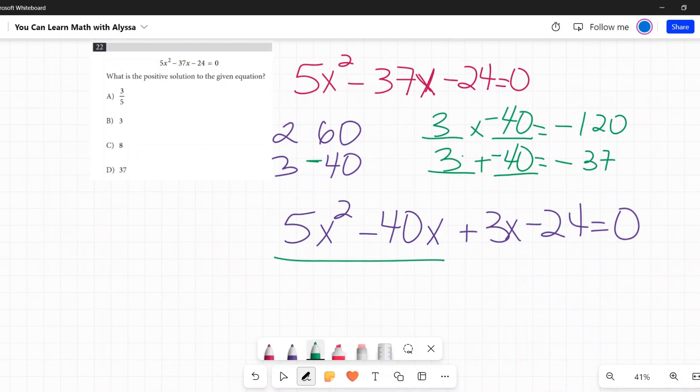Right, so first 5x squared minus 40x. What's my greatest common factor? 5 goes into both of those, so I can bring that out. And x goes into both of those, so I can bring that out. That leaves behind x minus 8. Over here, hopefully if I've done it right, I can pull something out that will leave x minus 8 behind. There is that greatest common factor of 3. So if I pull out a positive 3, sure enough, it leaves x minus 8 behind.